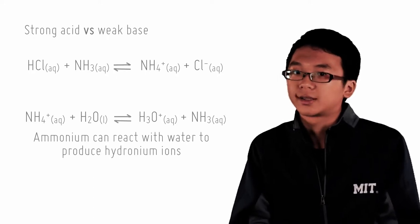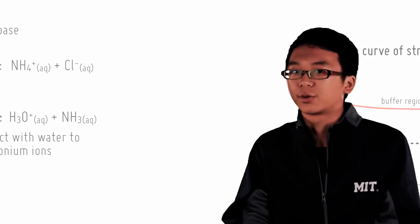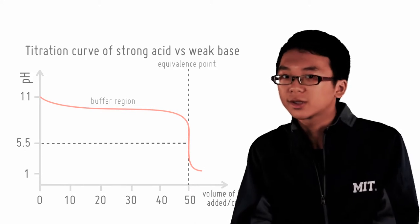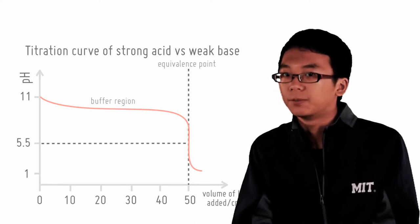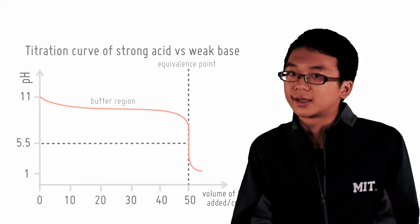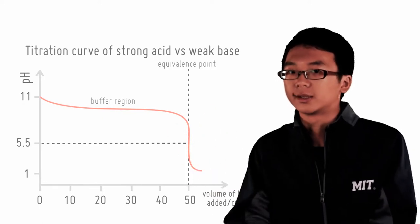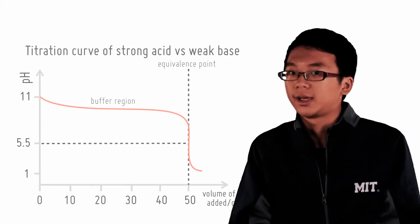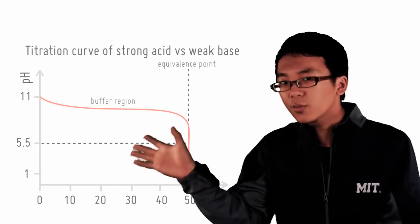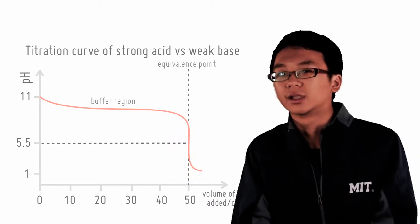This has two implications. It sets up a buffer in the region before the equivalence point, and two, it reduces the pH of the equivalence point to something lower than 7 because the solution at equivalence is acidic due to salt hydrolysis. The indicator to use for this is likely to be methyl orange because the endpoint of the indicator is somewhere in the change region of the equivalence point.